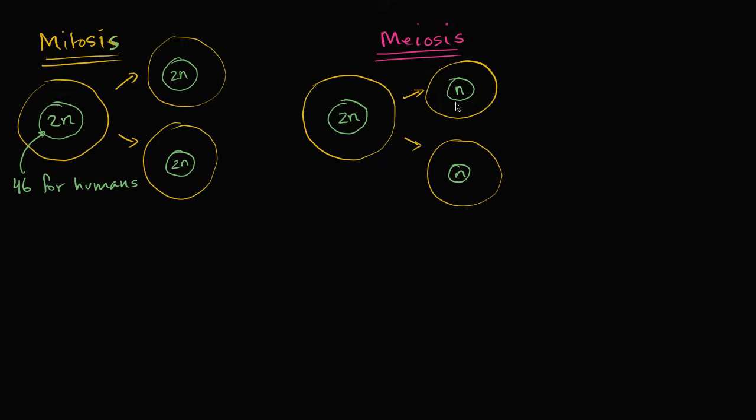Then each of these will then go through a phase, which I'll talk about in a second, which is very similar to mitosis, which will duplicate this entire cell into two. So now you're going to have four cells that each have the haploid number of chromosomes.